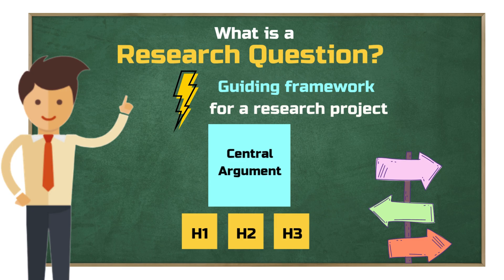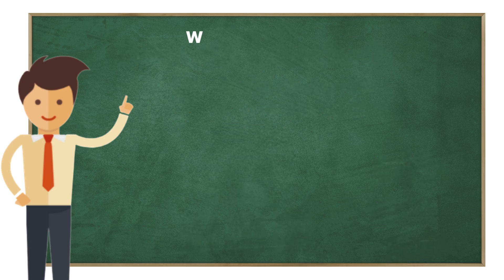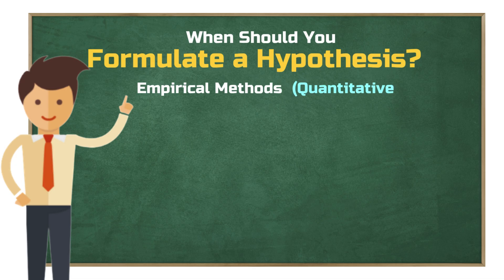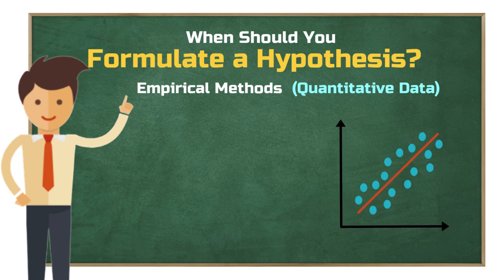A detailed guide on how to formulate a research question is also available on my channel. When exactly should you formulate hypotheses? Hypotheses are typically formulated when an academic research question is addressed using empirical research methods. In other words, if your study relies on quantitative data, you'll need to formulate a research hypothesis — or possibly multiple hypotheses — that clearly define the expected relationship between variables. Quantitative approaches are particularly suitable here because they provide systematic methods for testing hypotheses. If a statistically significant relationship between variable A and variable B is found, this result can support your hypothesis, assuming the hypothesis was initially framed to predict such a relationship.